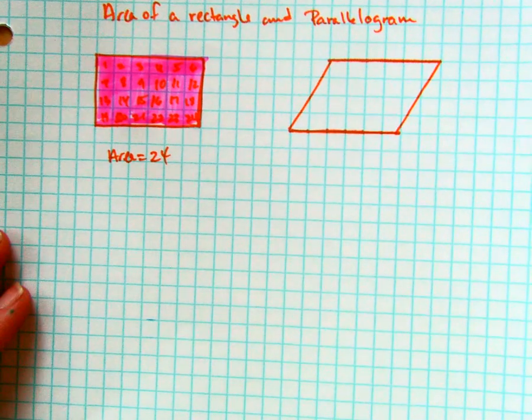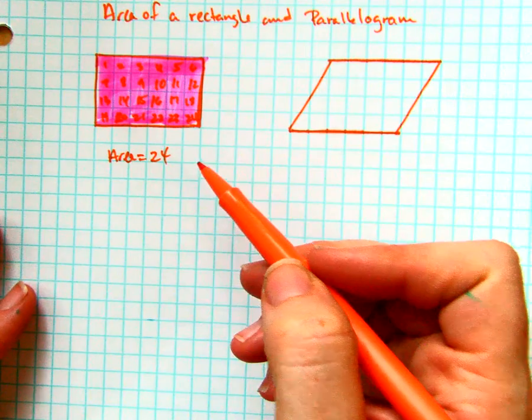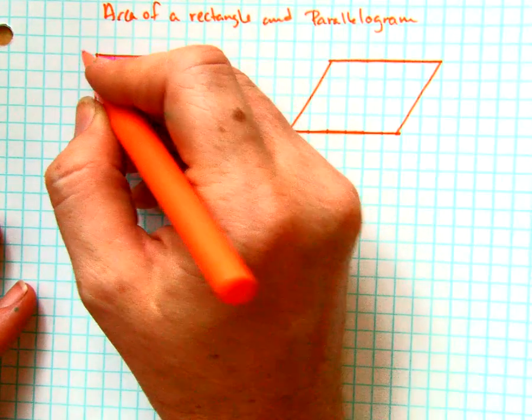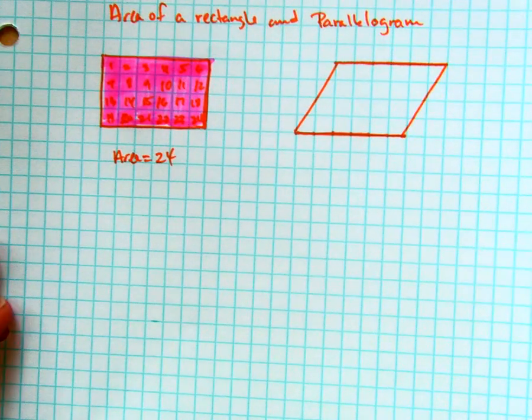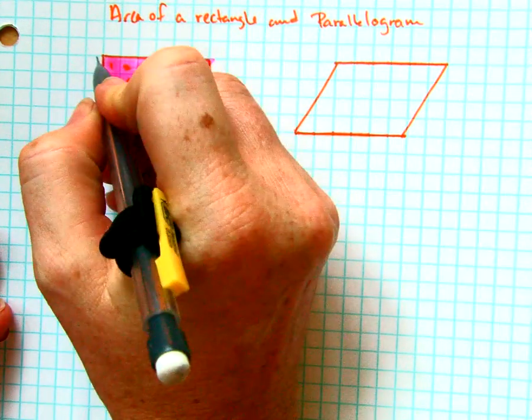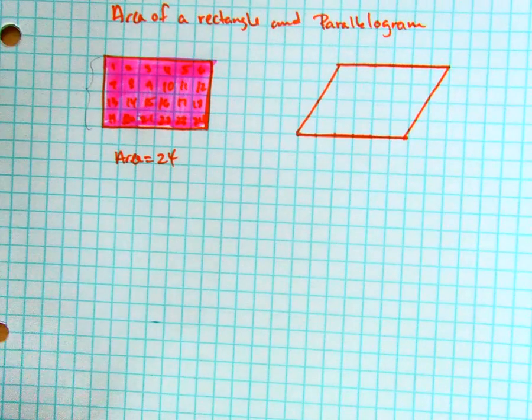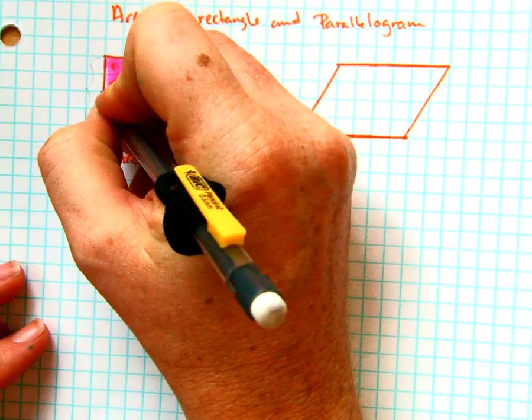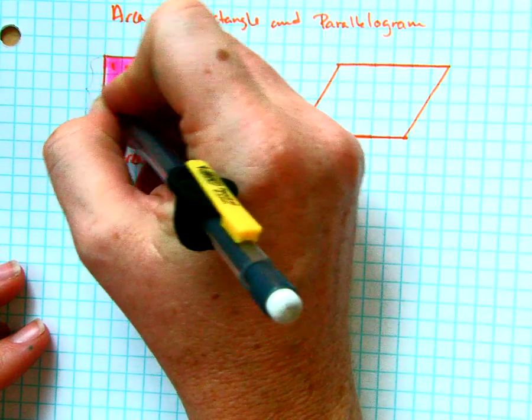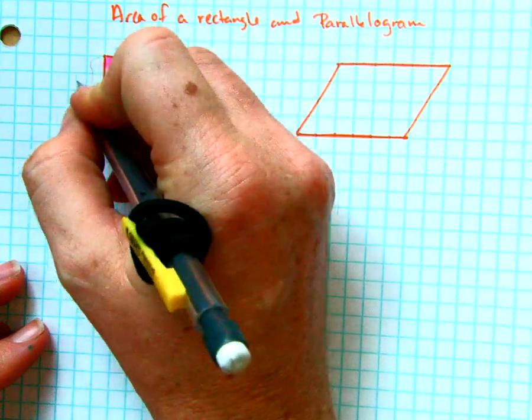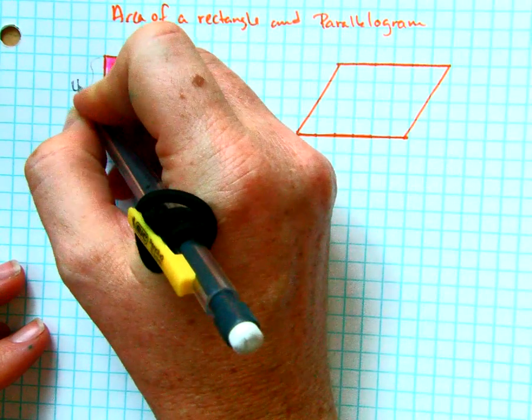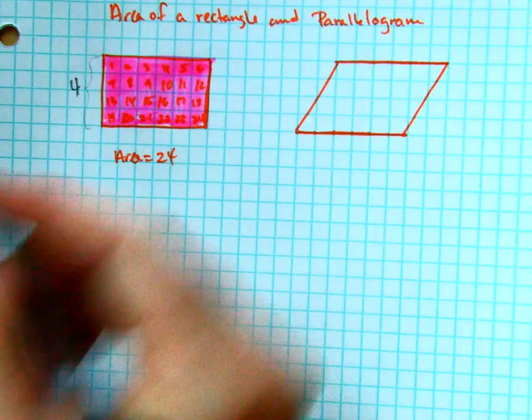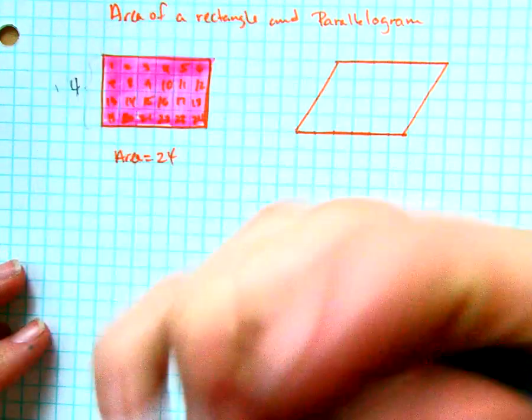But there's a faster way than to have to count blocks. So we look on this side of the rectangle and we should notice that it is length one, two, three, four. Mind you, you count spaces, not points. So the height of this rectangle is 4.